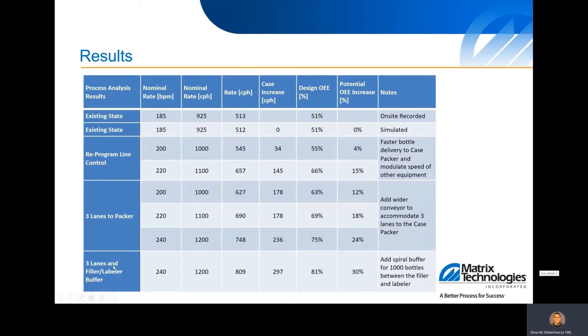And being able to have more of those bottles build up before we take down the labeler and then kind of the next stage, if it makes sense for the project, would be to add a buffer between the filler and the labeler, add like a spiral conveyor to hold another thousand bottles, try to break up some of those downtime events between those two pieces of equipment.